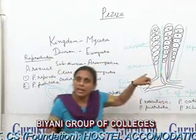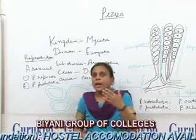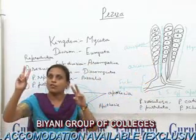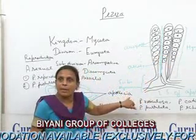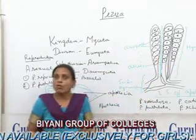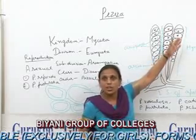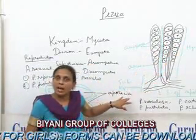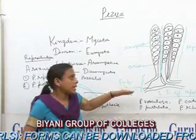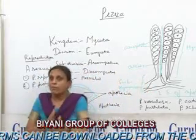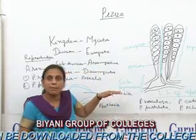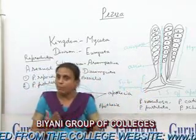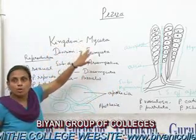The apothecium is the fruiting body of Peziza. It is cup-shaped, sessile or sub-sessile. In the longitudinal section of the apothecium, three parts are visible: the hymenium region, the sub-hymenium region, and the excipulum. The hymenium is the innermost part, consisting of asci and paraphyses arranged at right angles to the surface of the sub-hymenium. The sub-hymenium consists of a layer of hyphae arranged parallel to each other. The excipulum is the outermost part of the apothecium.